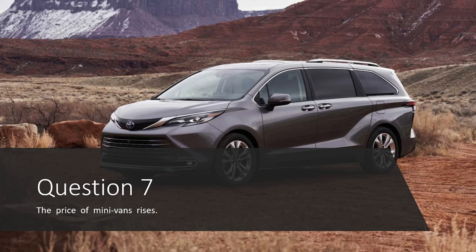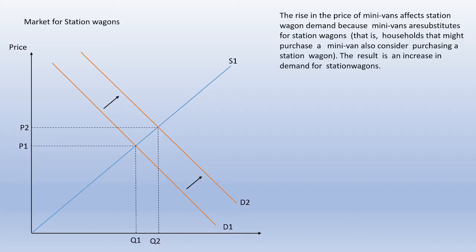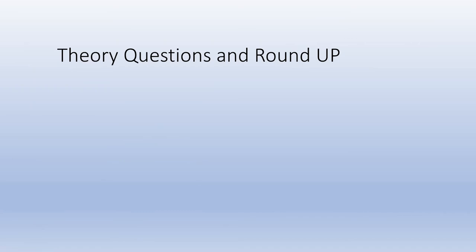Question seven: the price of minivans rises. Think about whether minivans are a complement or a substitute for station wagons. They're a substitute — you can either buy a minivan or a station wagon, as they serve very similar purposes. The rise in the price of minivans increases the demand for station wagons, because households considering a minivan will also consider purchasing a station wagon. Supply stays the same; the demand curve shifts right, resulting in a higher price and higher quantity.